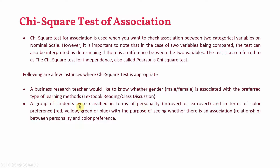A group of students classified in terms of their personality — introvert or extrovert — and in terms of colour preference — red, yellow, green, or blue — with the purpose of seeing whether there is an association or relationship between personality and colour preference, both on nominal scale.